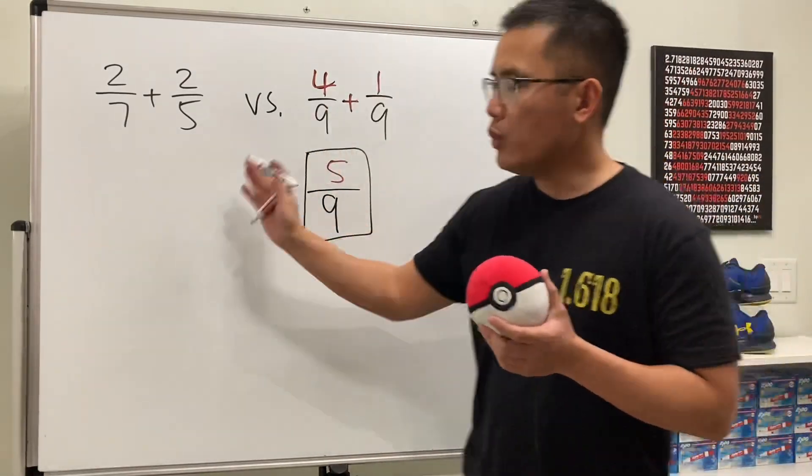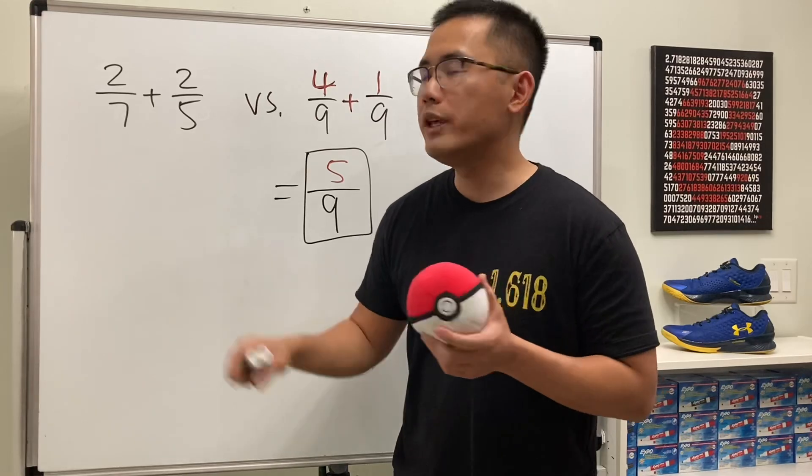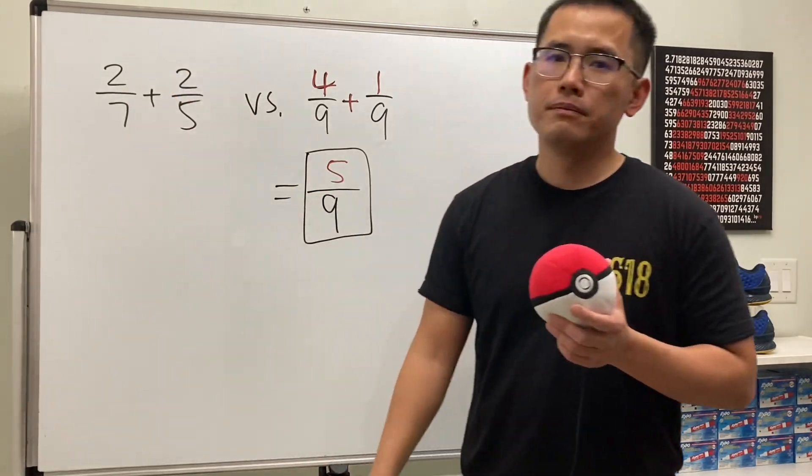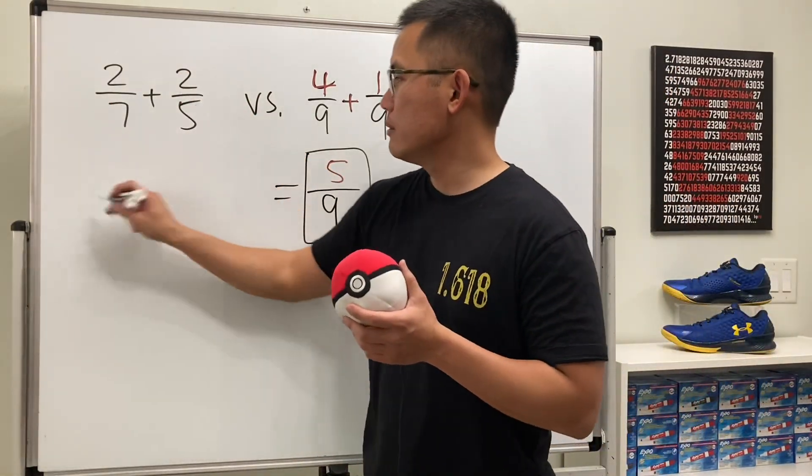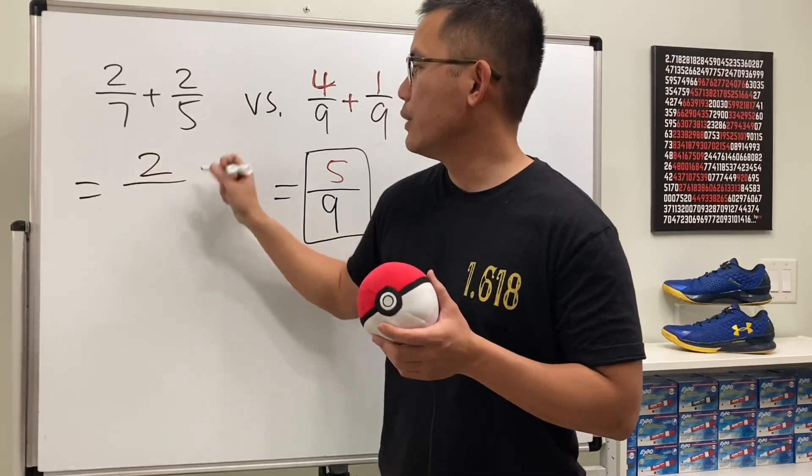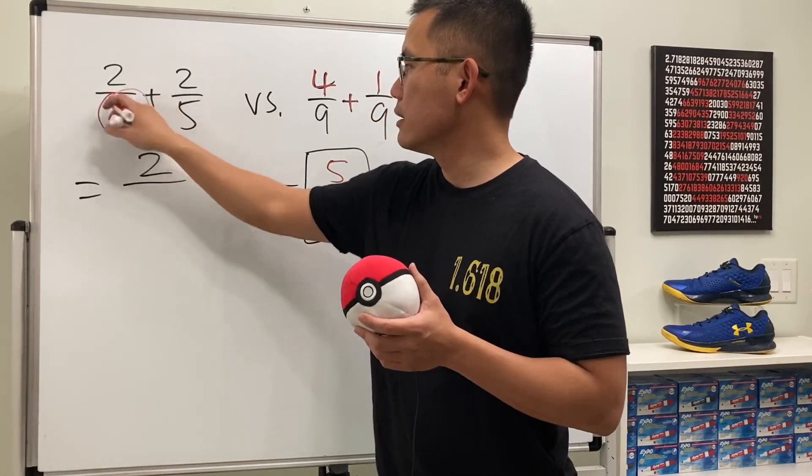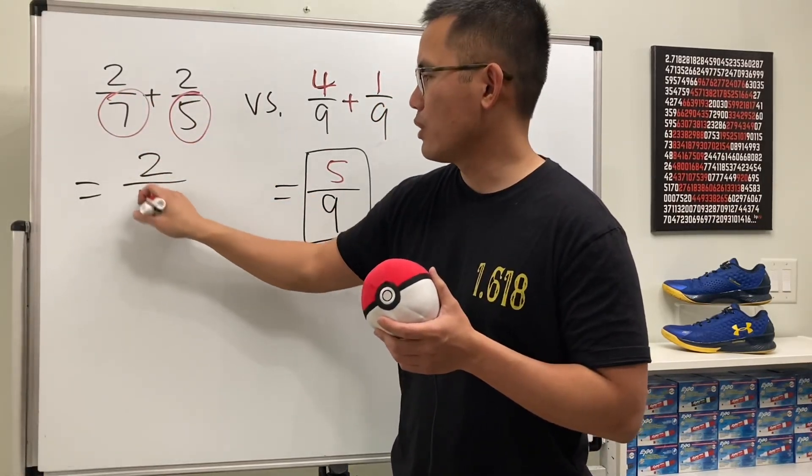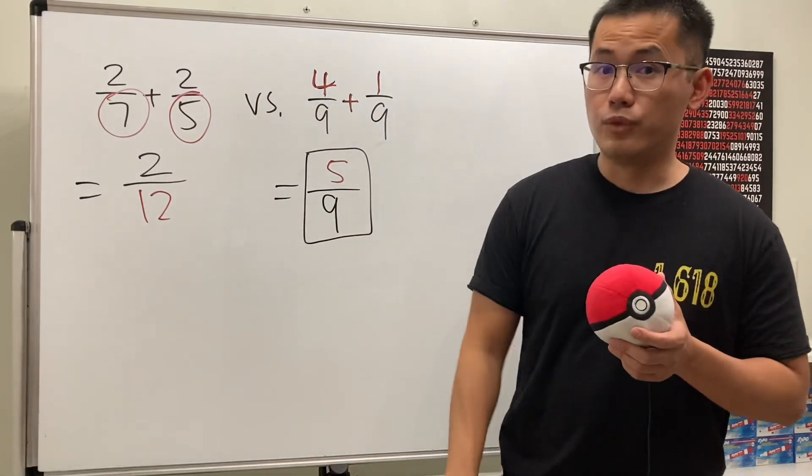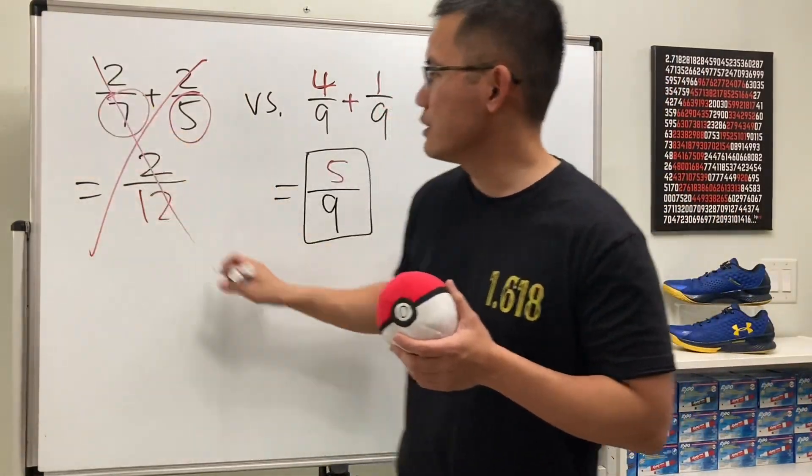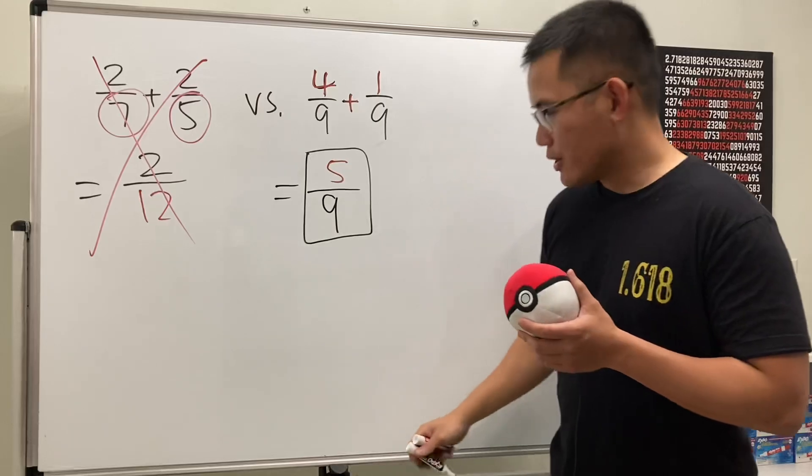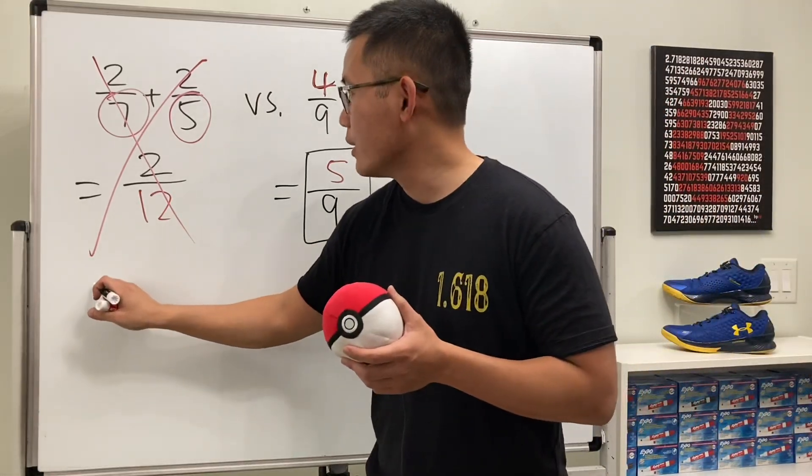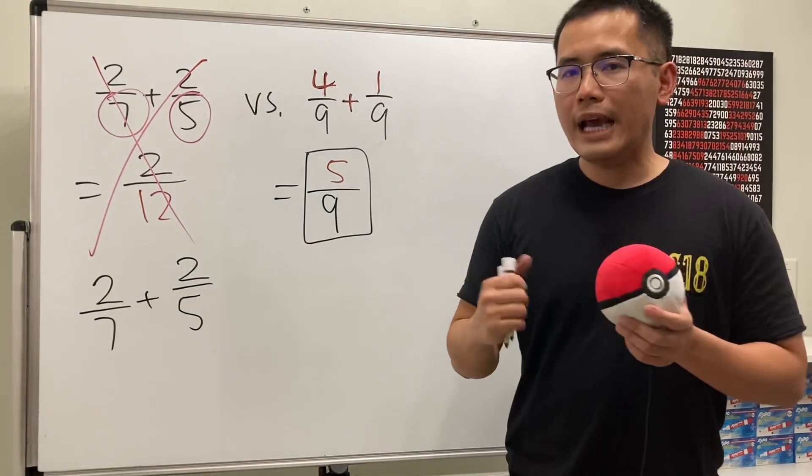Now how would you add fractions when we have the same numerator? Do we just keep the numerator like this, 2, and then we just do this plus that which is 12? No, this is not the way to do it. Surprising, huh?